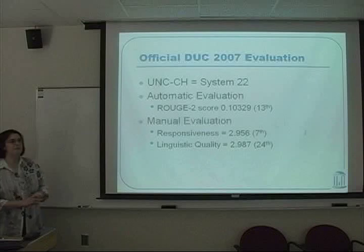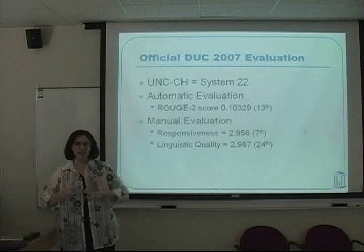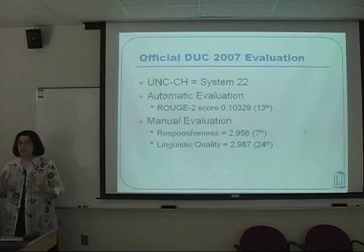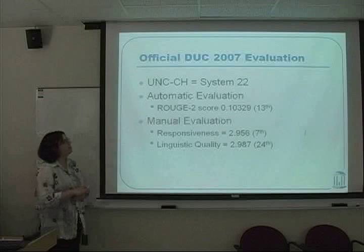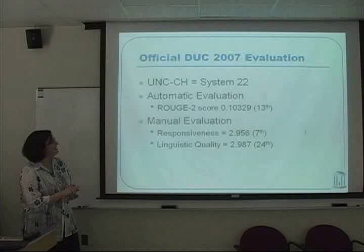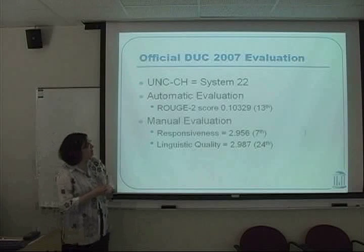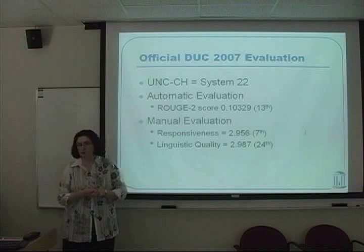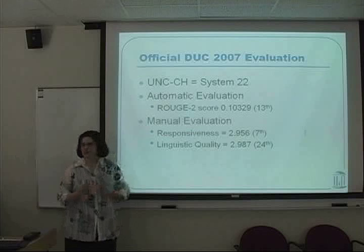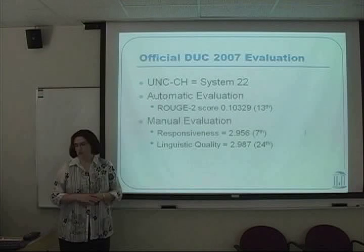Our goal was to get a system up and running and start looking at linguistic features. In terms of our official DUC 2007 scores, we were system 22, not 20. Our automatic evaluation ranked us 13th out of 32 systems. Our responsiveness came in 7th. And our linguistic quality, we actually came in 24th.